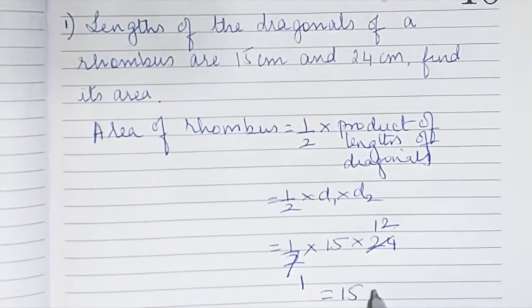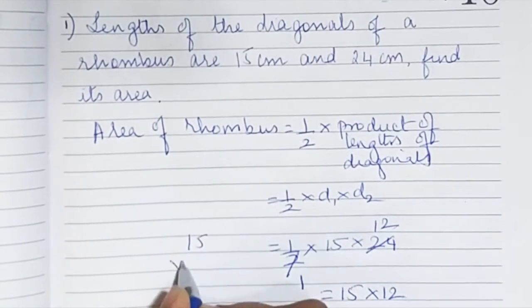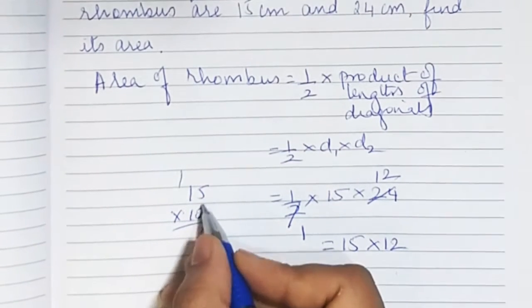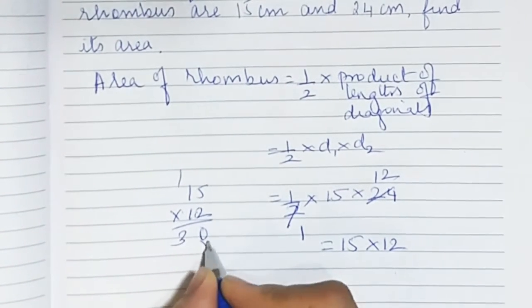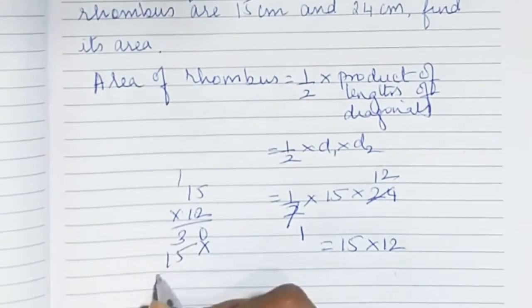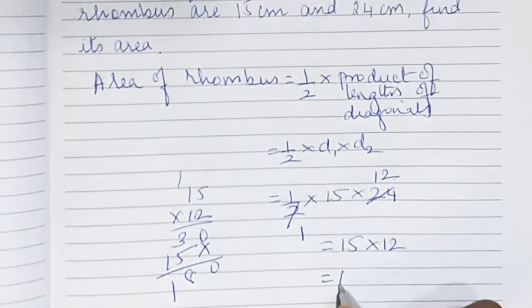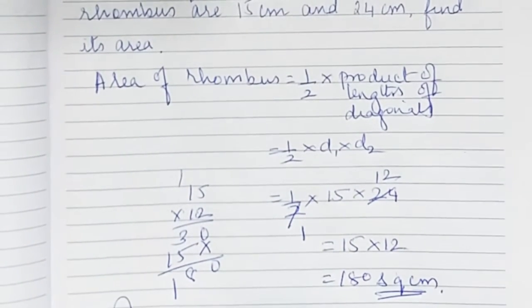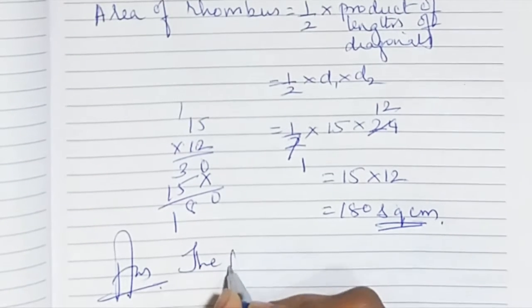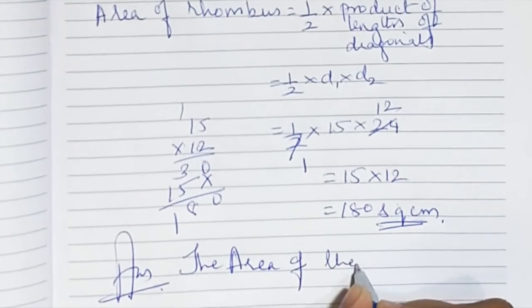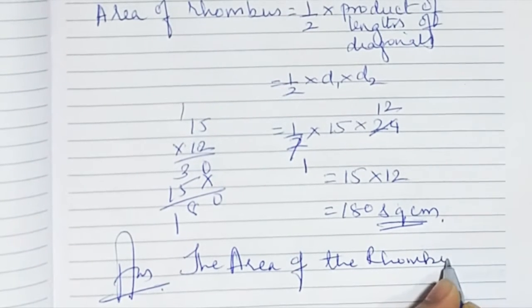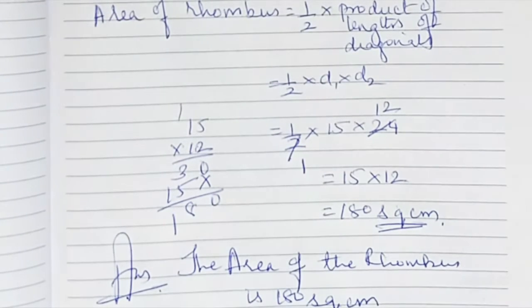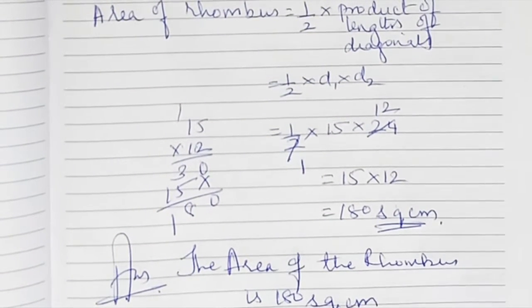What remains is 15 into 12. Multiplying: 15 into 12 is 180. Since it is area, the answer is 180 square centimetres. Final answer: the area of the rhombus is 180 square centimetres.